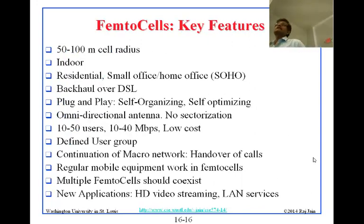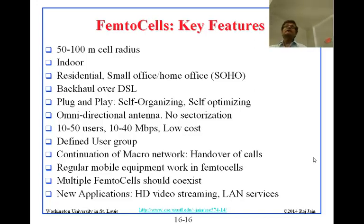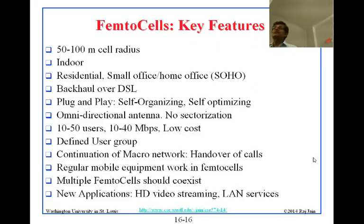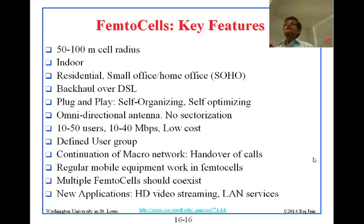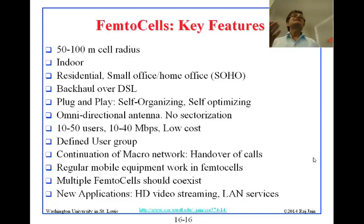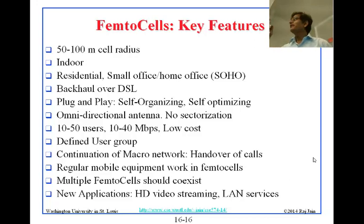Femtocells are being trialed — some companies have tried them in some homes. In some areas of the United States you can get or buy a femtocell if you are part of a trial. They improve signal in places where the macrocell signal does not reach. If you are in a situation where your phone has no signal at home, you might want to look into femtocells. The femtocell has a 50 to 100 meter cell radius, intended for indoor residential and SOHO — small office, home office — use, with backhaul over DSL.